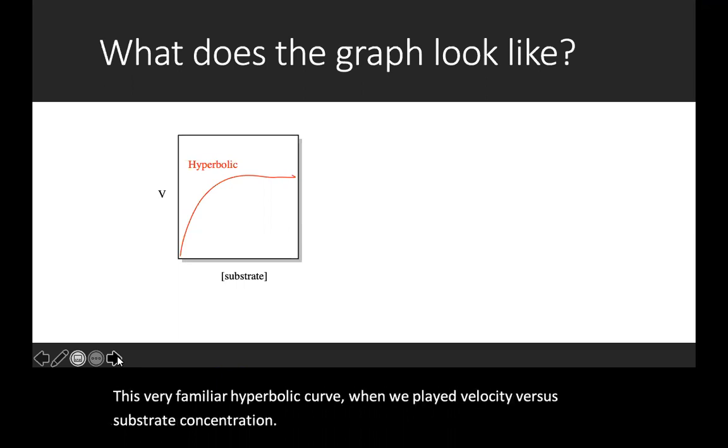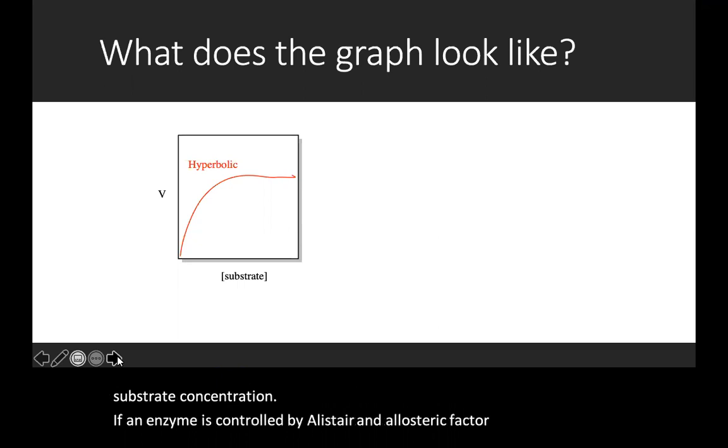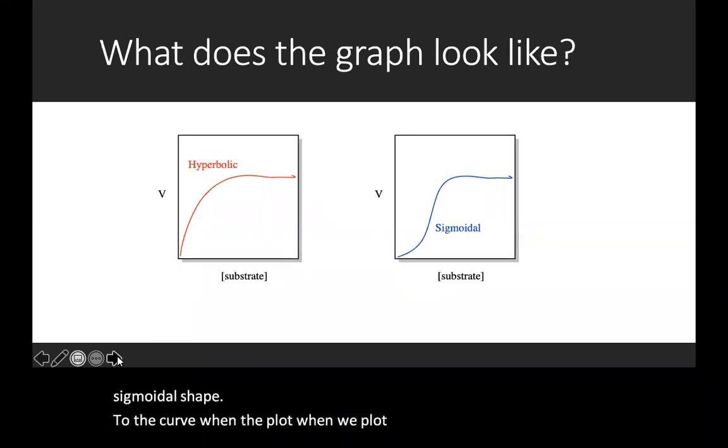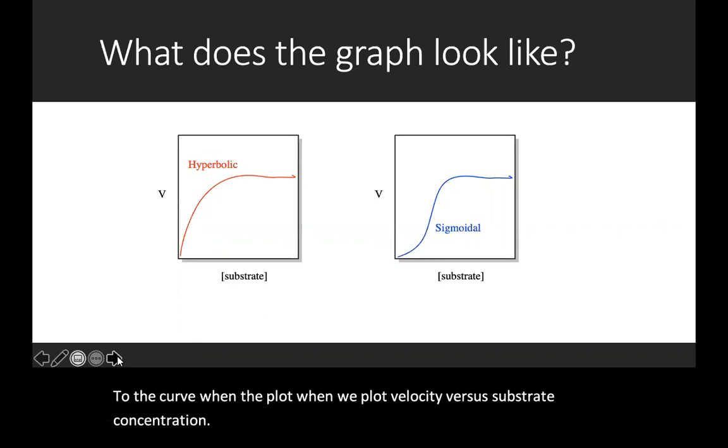If an enzyme is controlled by an allosteric factor, we see a sigmoidal shape to the curve when we plot velocity versus substrate concentration. So how does this graph get the sigmoidal shape?